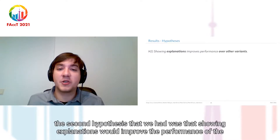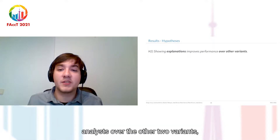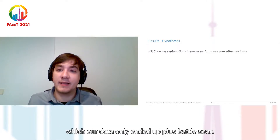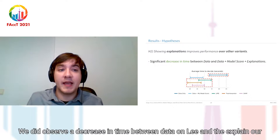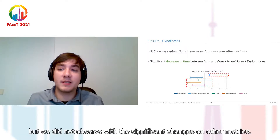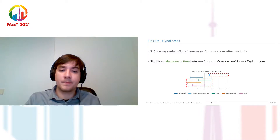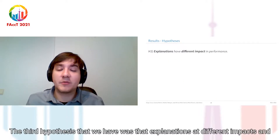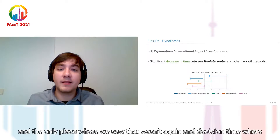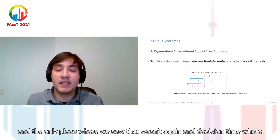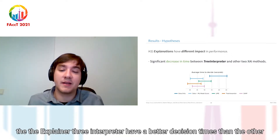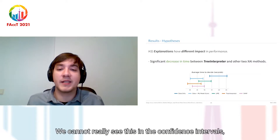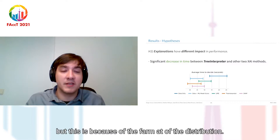The second hypothesis was that showing explanations would improve analyst performance over the other two variants. We did observe a decrease in decision time between data only and the explainer methods, but no other significant changes were found on other metrics. The third hypothesis was that different explanations have different impacts on user performance. The only place where this was observed was again in decision time, where TreeInterpreter had a better decision time than the other explainers. This is not clearly visible in the confidence intervals due to the format of the distribution.